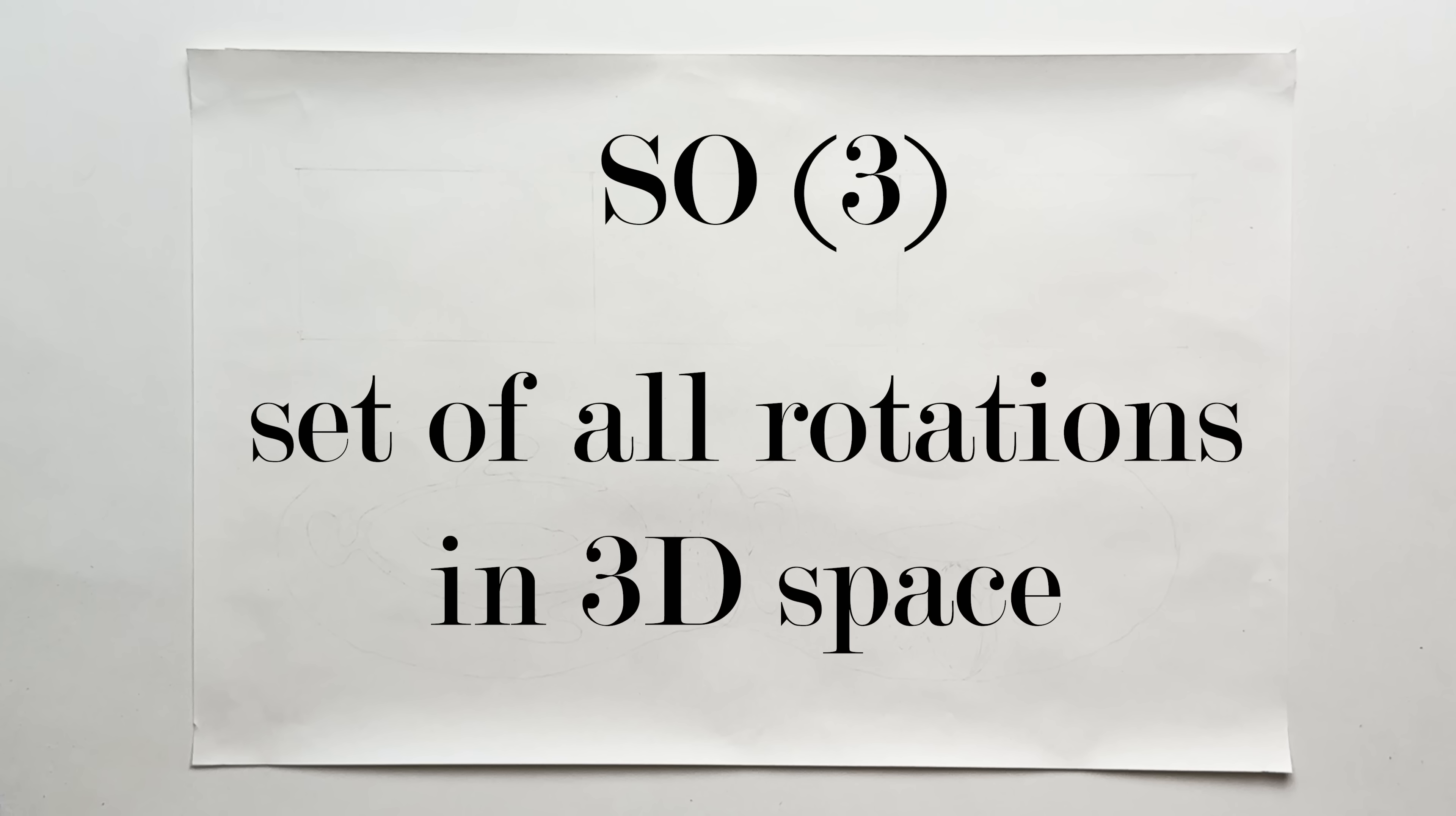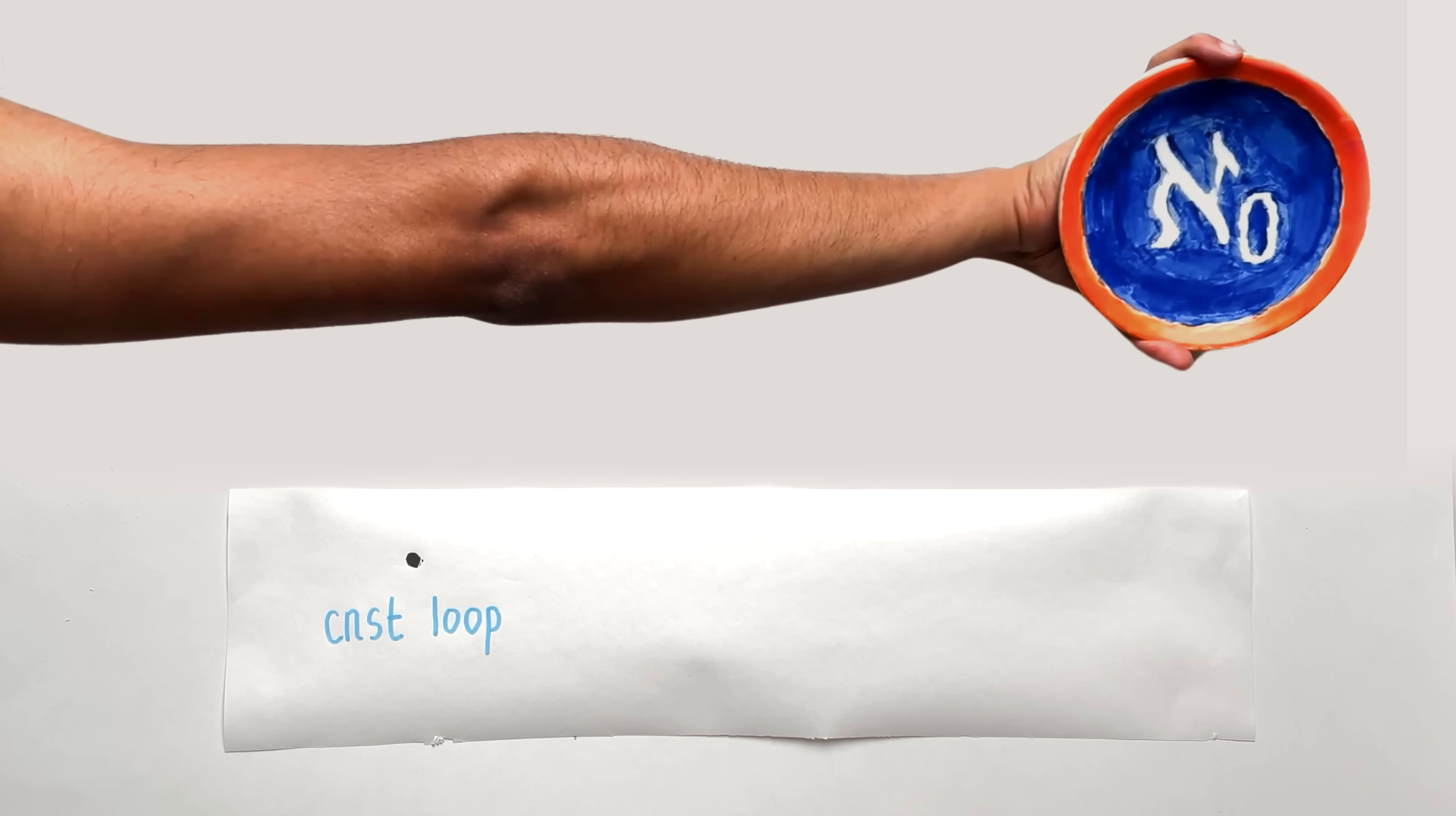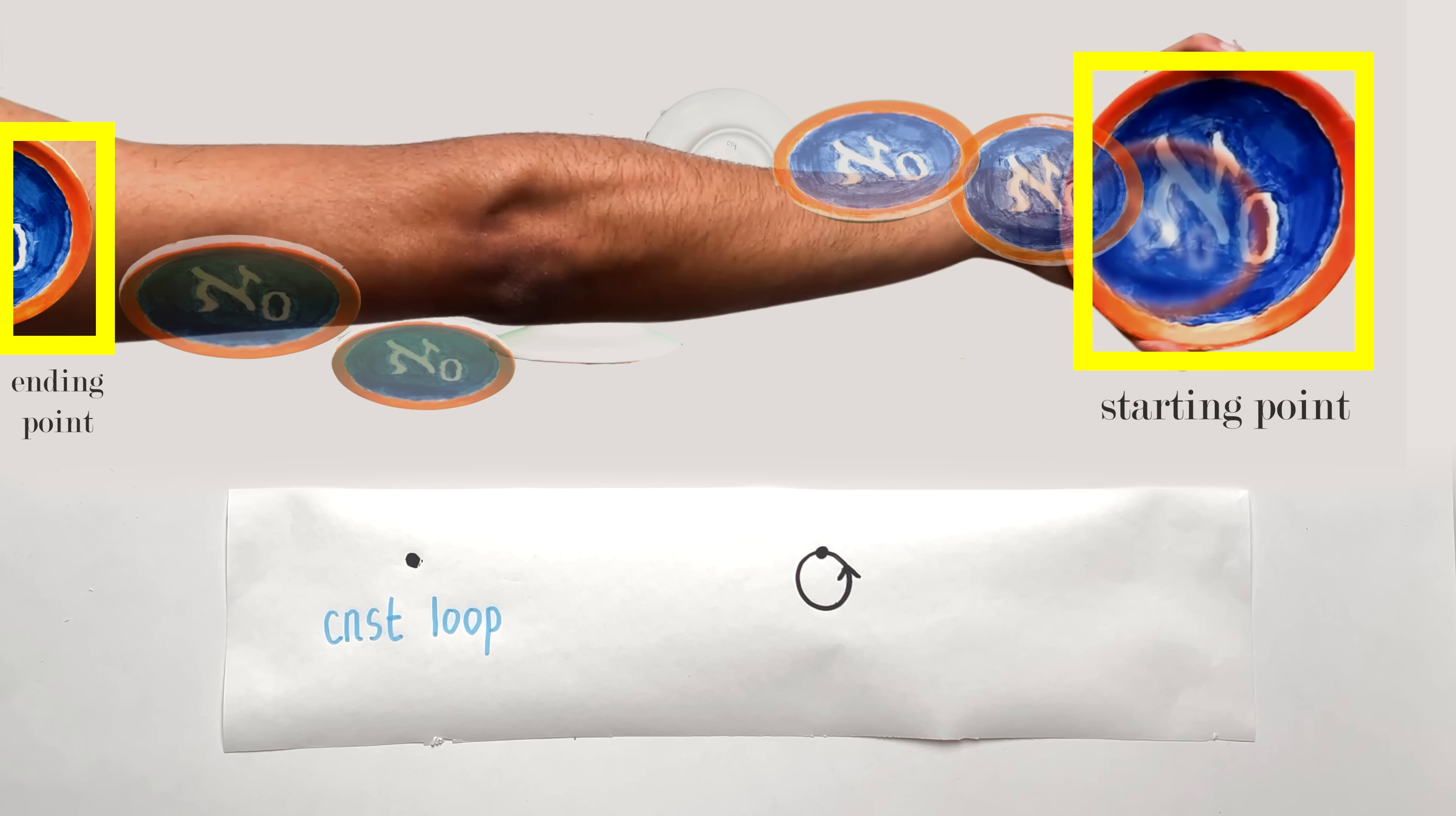We can represent a loop as an arm holding a plate. Imagine a copy of the plate at every point on the arm. The plate here represents the starting point of the loop, and the plate here represents the ending point. This is the constant loop, because the plate is in the same position at every point in the arm. Another example of a loop would be if my arm is twisted 360 degrees. As we travel across my arm, the plate is rotating. But the start and end position are the same. This is a non-constant loop in SO(3).